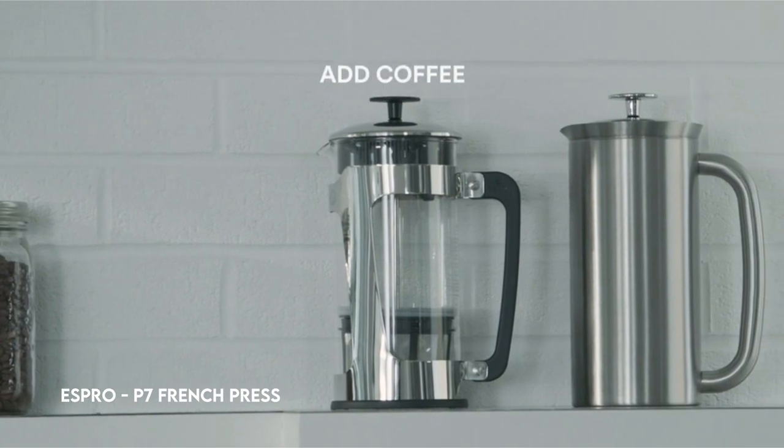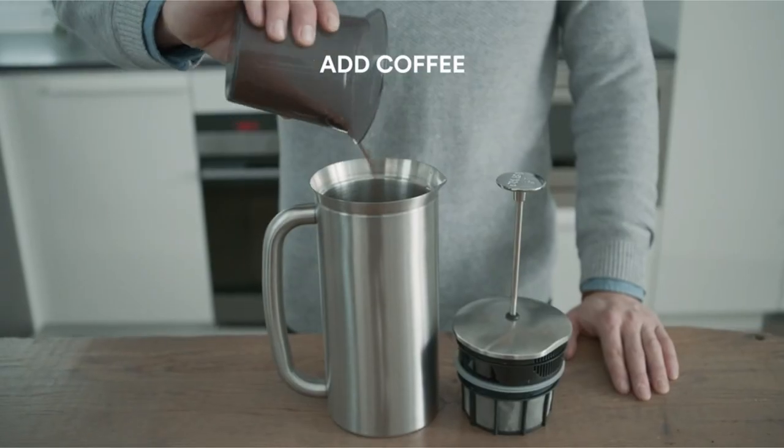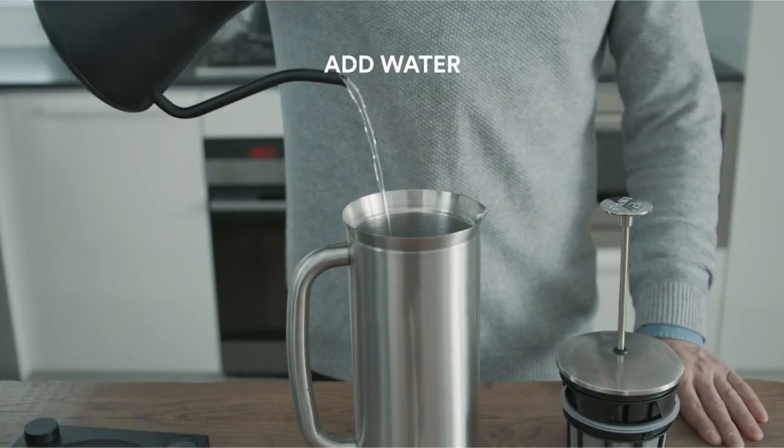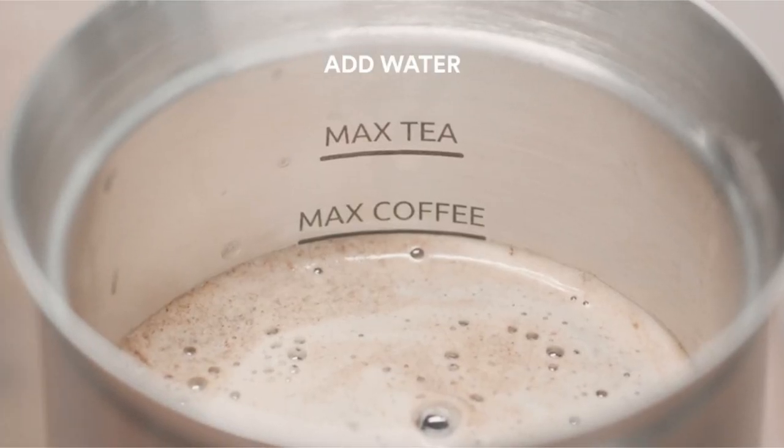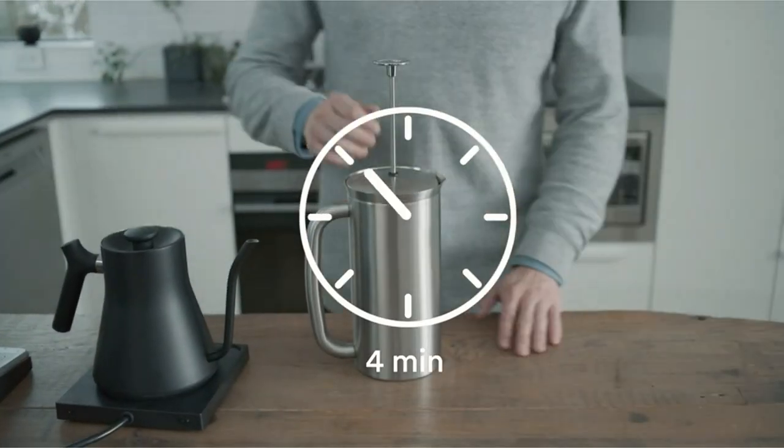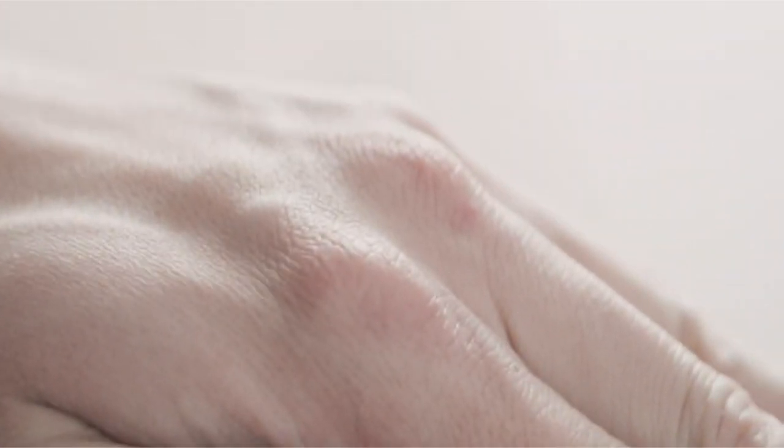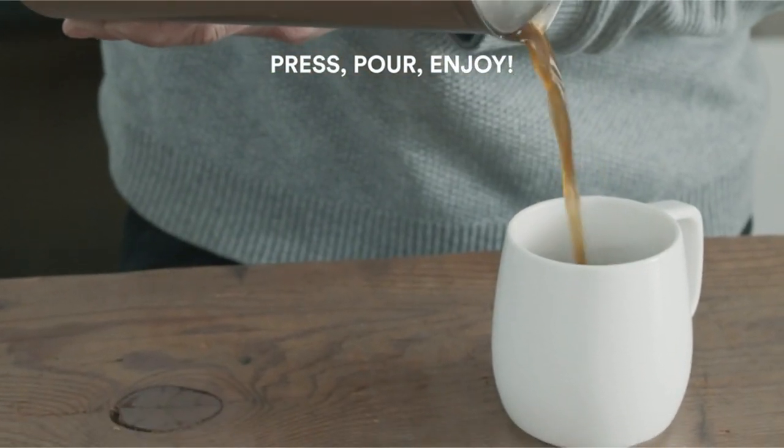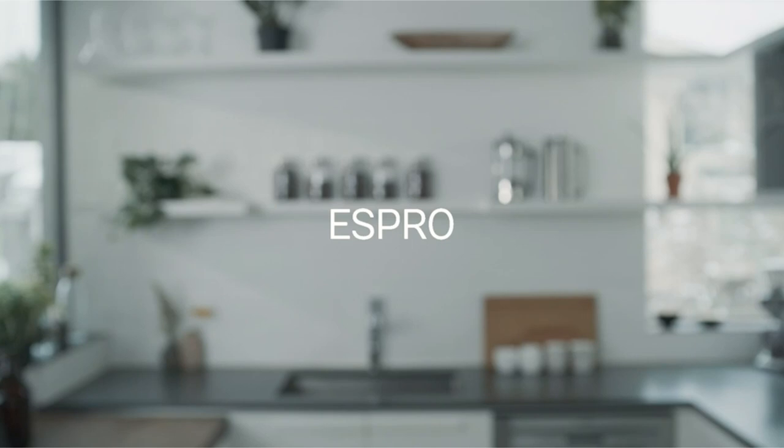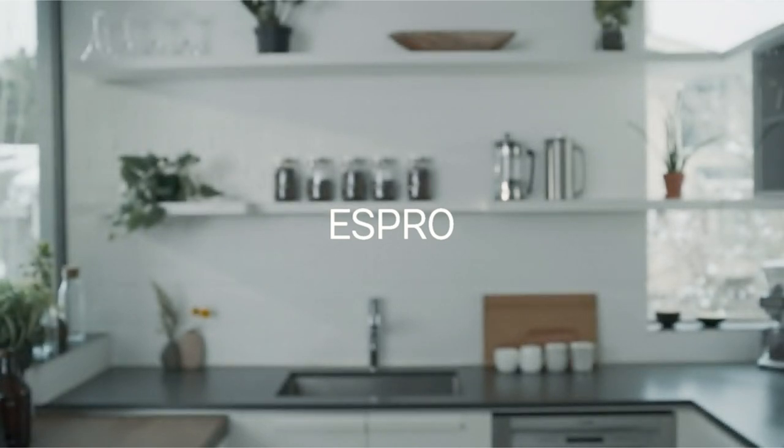On number 1, ESPRO P7 French Press. The ESPRO P7 coffee presses are precisely built to enrich your at-home coffee experience, delivering a consistently smooth and tasty cup from the first sip to the last, allowing you to become your personal coffee hero. This is made possible by their proprietary double-micro-mesh filter system, which effectively eliminates grit and sludge, ensuring a pleasant and uninterrupted coffee-sipping experience.